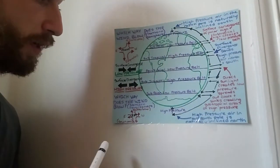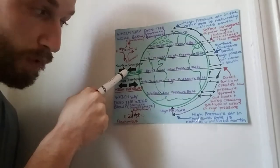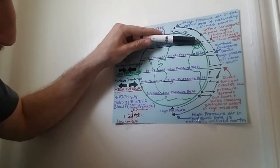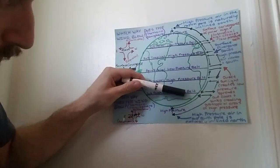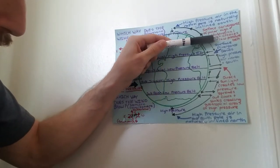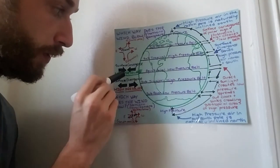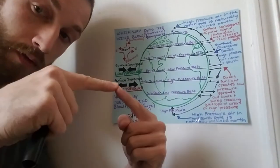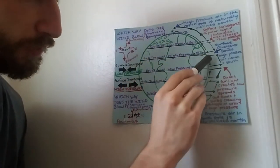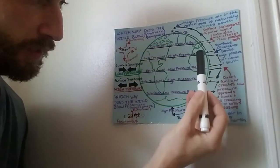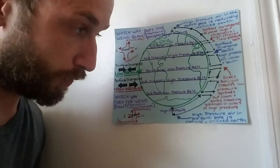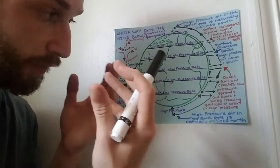Always remember: low pressure emerges from surface convergence. You can see this in the subpolar low pressure belts — high pressure air is converging in one spot, creating a low pressure zone. So surface convergence equals low pressure. And surface divergence — whenever you see diverging winds on the surface of the earth — that's how you know you're talking about a high pressure belt.